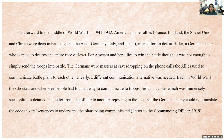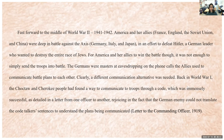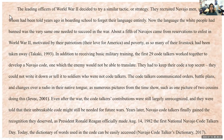For America and her allies to win the battle, it was not enough to simply send troops. The Germans were masters at eavesdropping on phone calls that allies used to communicate battle plans. A different communication alternative was needed. Back in World War I, the Choctaw and Cherokee people had found a way to communicate through a code, which was immensely successful — the German enemy could not translate the code talker sentences to understand the plans being communicated. The leading officers of World War II decided to try a similar tactic and recruited Navajo men, some of whom had been told years ago in boarding school to forget their language entirely. Now, the language white people had banned was the very same one needed to succeed in the war.